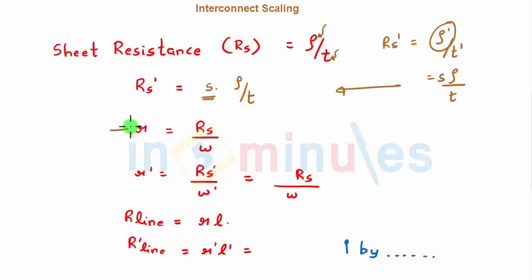My line resistance per unit length R is given by Rs by W. Rs has increased by a factor of s which we have written here, and W does not change. In this example we have presumed that W is not scaled down. That means that R' increases by a factor of s.